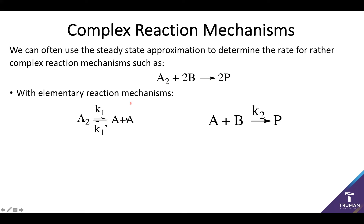In this case, each of our intermediate A molecules can then interact with our other reagent B to produce a product in a second step. So we're going to want to examine this reaction mechanism, but in order to do so, we first have to acknowledge we have a pesky intermediate, and as we've seen previously, trying to address intermediate concentrations can be a bit messy.